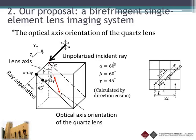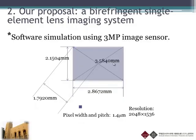When unpolarized incident rays pass through this lens, they will be split into O-ray and E-ray. We expect the distance between O-ray and E-ray to be two times the square root of two times the pixel pitch. The image sensor used in our simulation is a 3-megapixel sensor where the pixel width and pitch are both 1.4 micrometers.